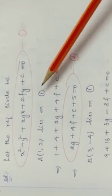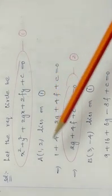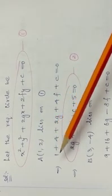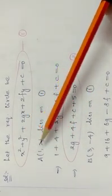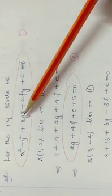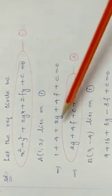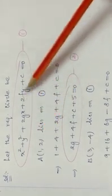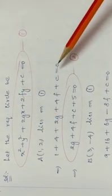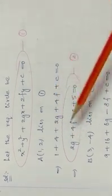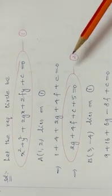Point A (1, 2) lies on equation 1. Substituting x = 1, y = 2: 1 squared is 1, 2 squared is 4, 2g into 1 is 2g, plus 2f into 2 is 4f, plus c equal to 0. So: 2g plus 4f plus c plus 5 equal to 0 — equation 2.